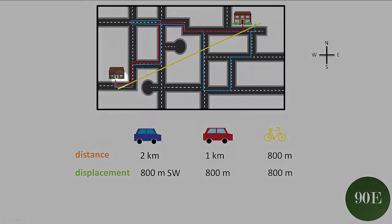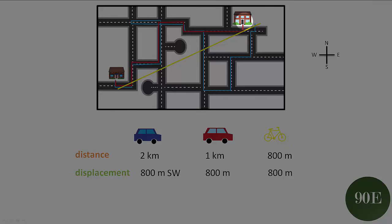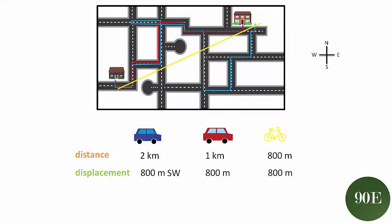You, on the other hand, are moving in a northeast direction to meet your friend. So your displacement in your red car and your yellow bike will be 800 meters northeast.